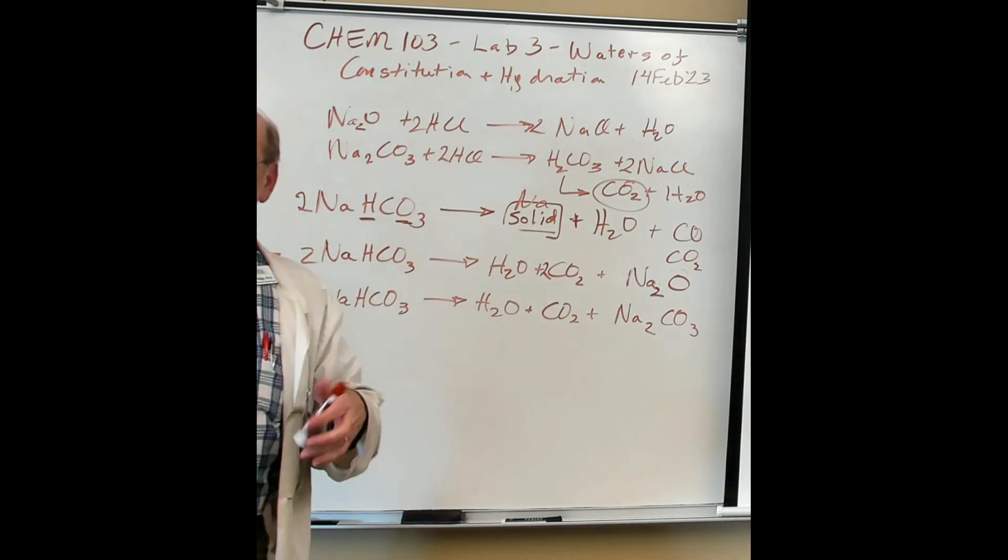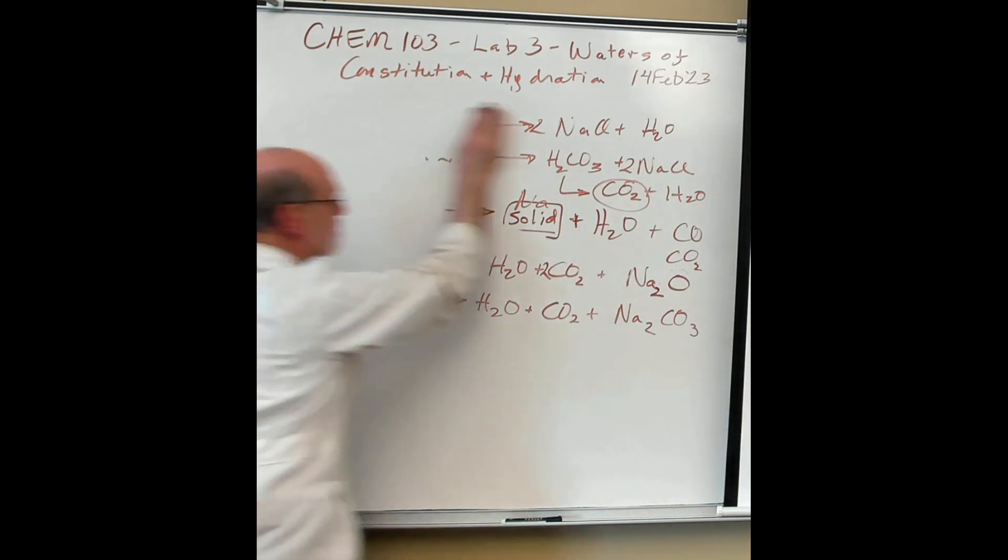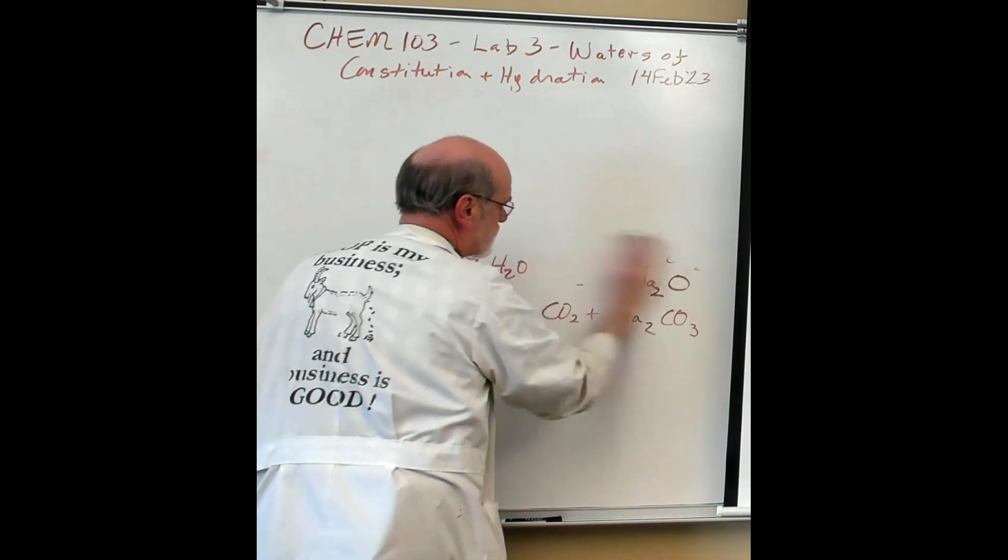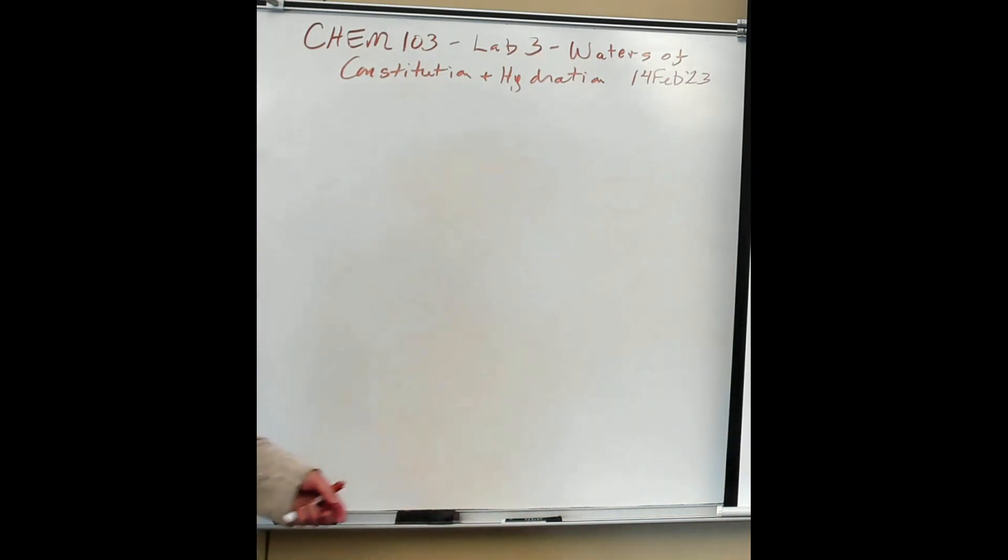So when we go in the lab, you're going to have crucibles. And I've got some nice, fresh, clean ones in there. Ones that haven't been used over and over again. So you can start off with some clean stuff. And the method tells you to heat them up first. I just say, burn them off. And that just drives off any water or any volatiles that may be collected. Burns off any dust or whatever.